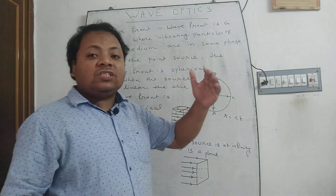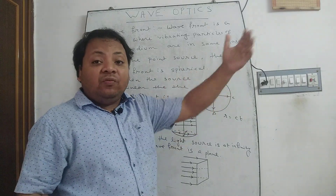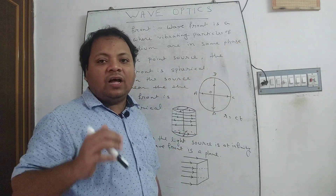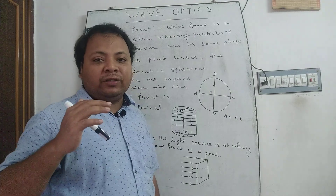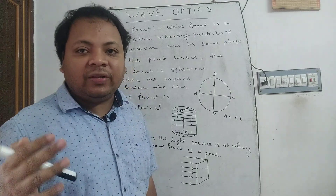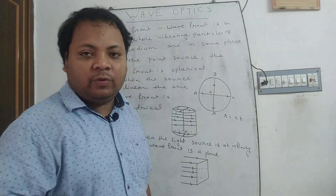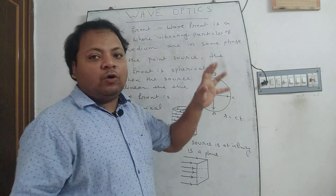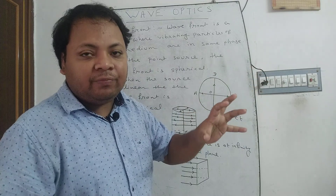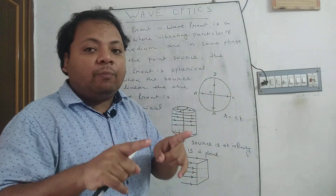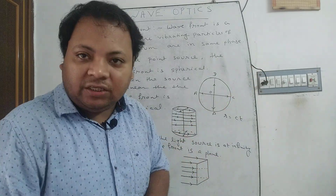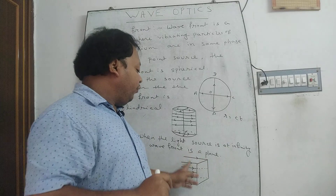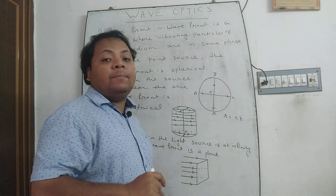When the source is at infinity — for example, the sun — when the light comes from infinity, then the light rays are parallel to each other. In this case, the wavefront is a plane wavefront.